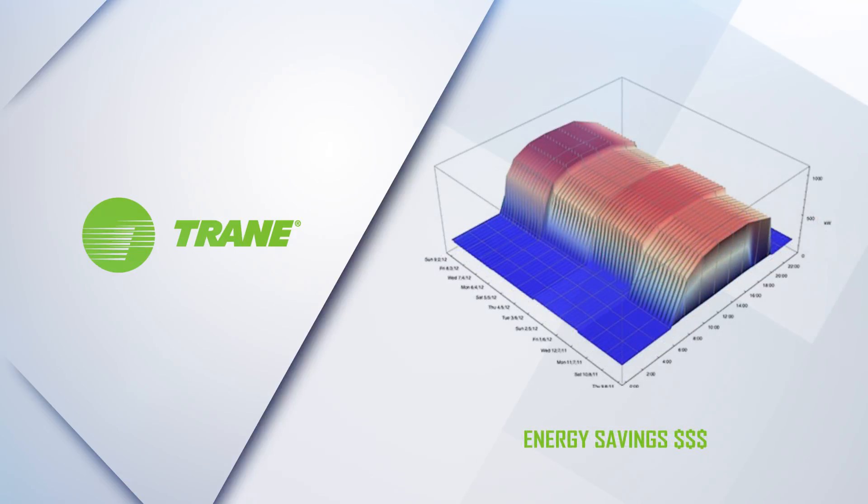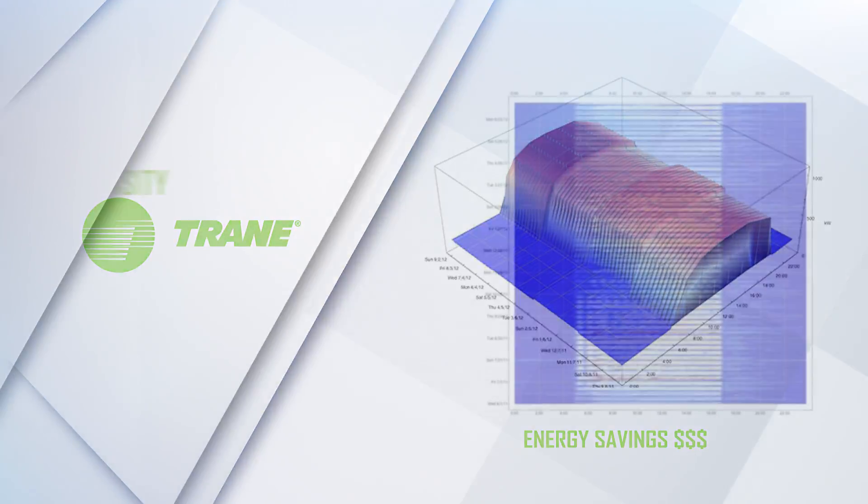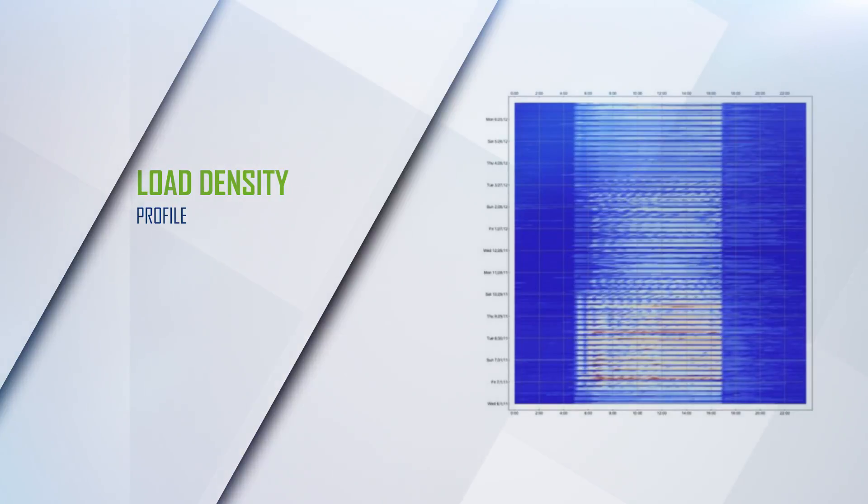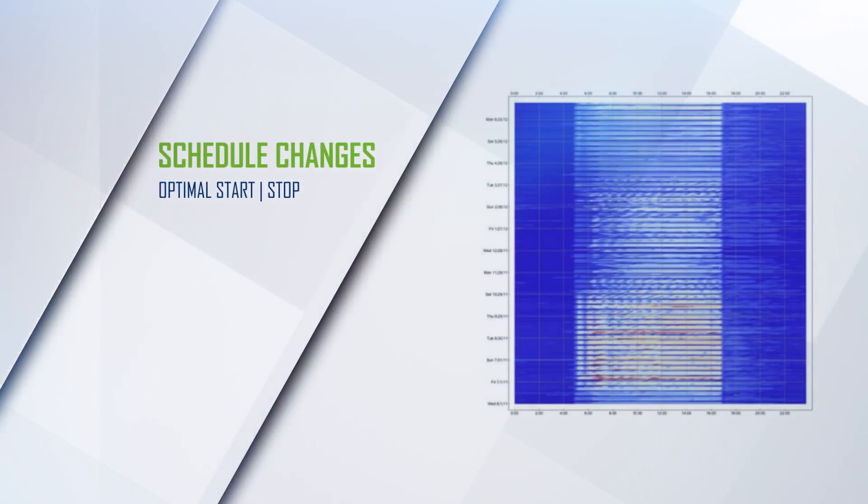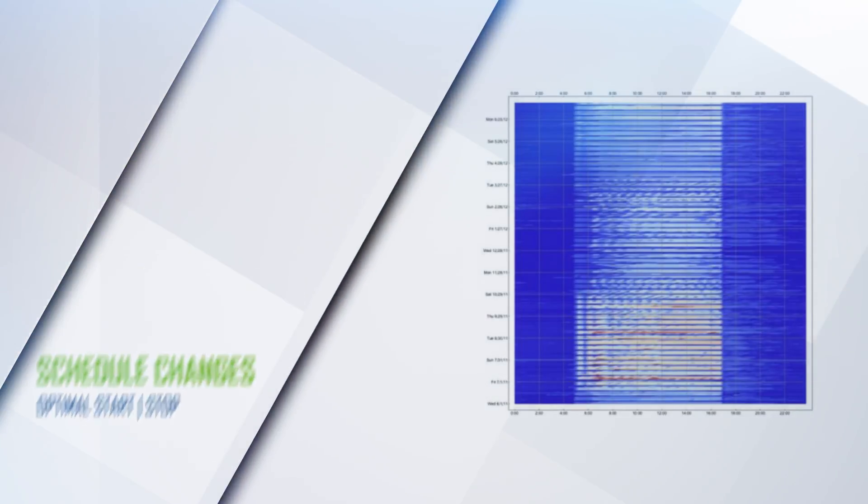Producing immediate energy savings with operational changes alone. In a low density profile, we can see the impacts of the shutdown and startup of equipment. That can lead to schedule changes for optimal start-stop or morning warm-up, and finally to your building's more ideal energy profile.